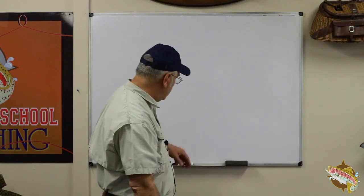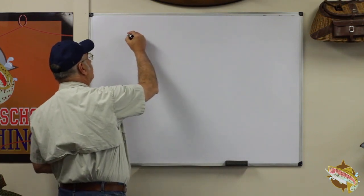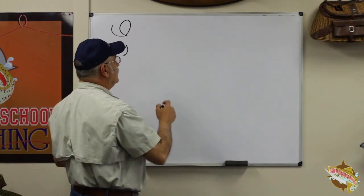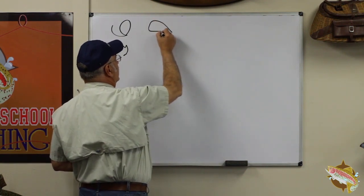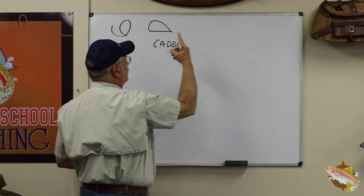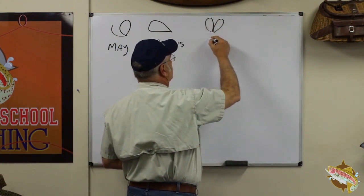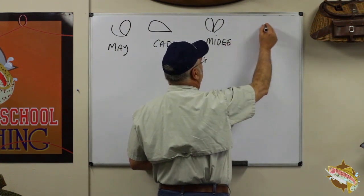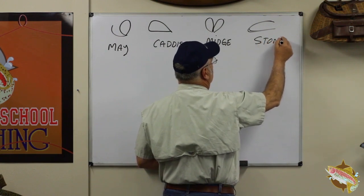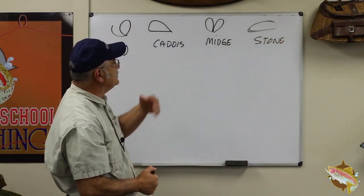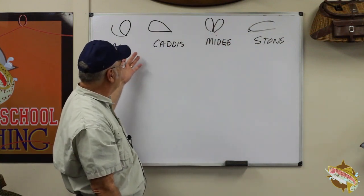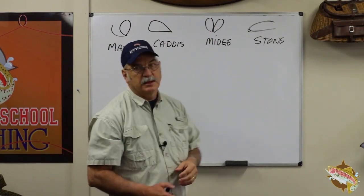When we look at the simplicity of entomology, it's not that difficult. Let's recognize what these four aquatic insects are. Number one is what we call a mayfly, which has an upright wing. The second is called a caddis or caddisfly. The third is a midge. And the fourth is called a stonefly. We recognize them by their adult wing shape, and we need to have flies in our fly box that represent all four.